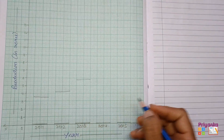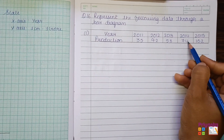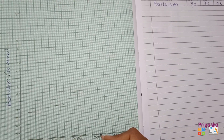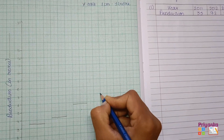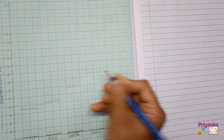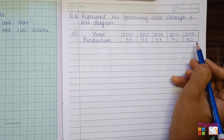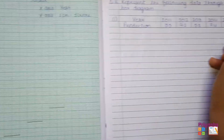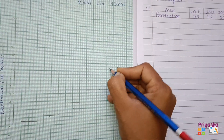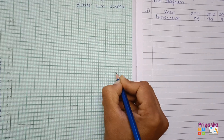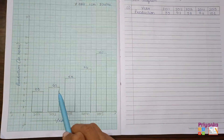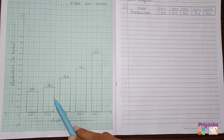For 2014 it shows 7.4 production, so mark till 7 and a little more to 7.4. For 2015 it goes till 10.2, mark at 10.2. Now prepare the final bar diagram. Don't forget to write the production numbers on each bar.